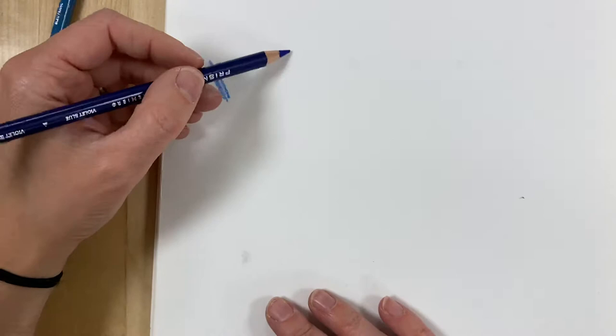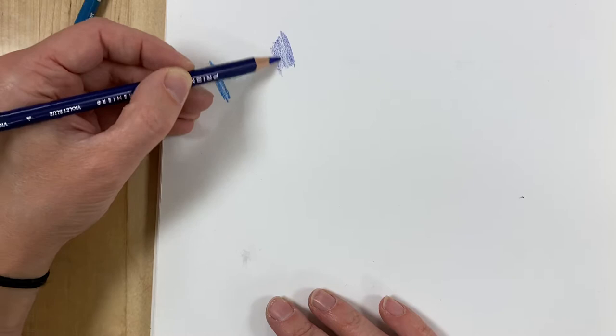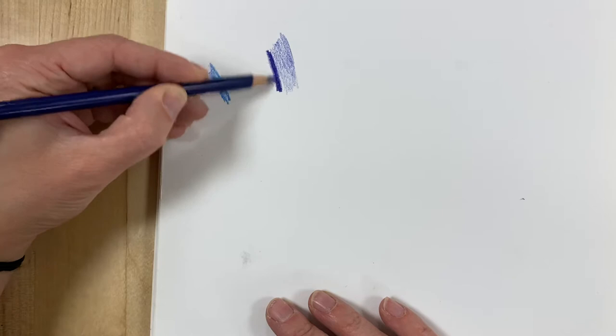So one of the first things to know with colored pencils is you have a lot of decision making when it comes to creating different values. So here I'm drawing really lightly with my pencil, but I can also go and draw really darkly and I can create many values in between those two shades that we see.